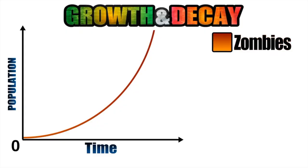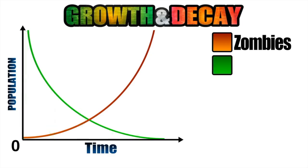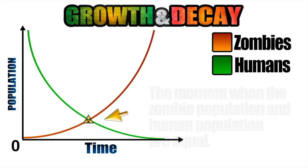Now on the same graph, let's also show the population of humans as time increases, which decreases by half each time until we are whittled down to zero. Notice that these graphs intersect and that point of intersection represents the moment when the human population and the zombie population are equal.